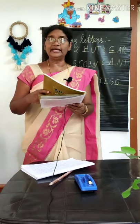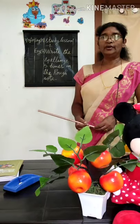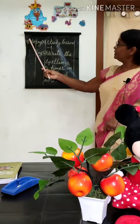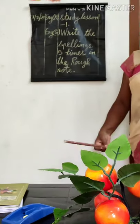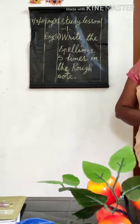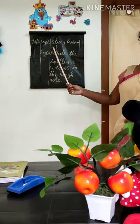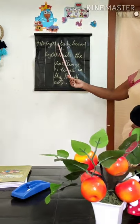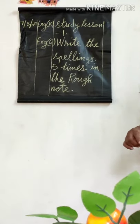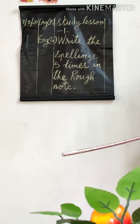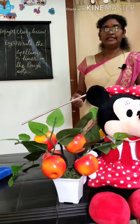All of you take a diary for writing the assignment. Write today's date: 7, 8, 20. Write English Reader — study lesson 1. You should learn all the question answers, new words, family words, and opposite gender. Your exam is coming — first exam is from August 17th to 26th. Try to learn nicely and get good marks.